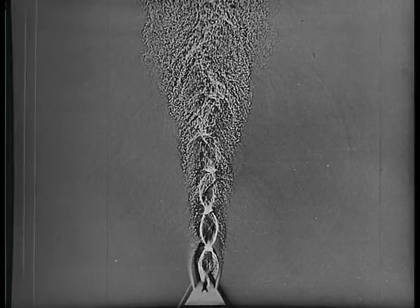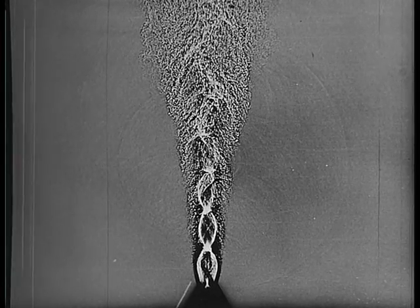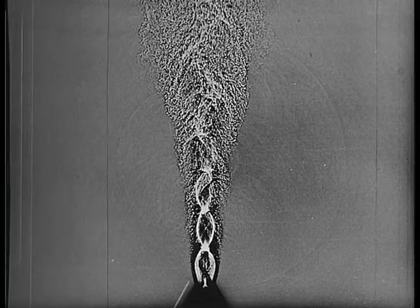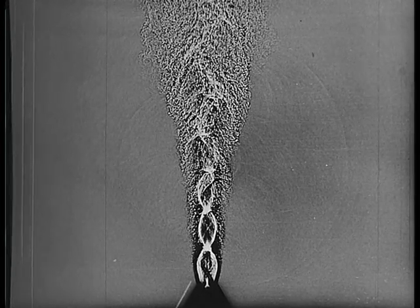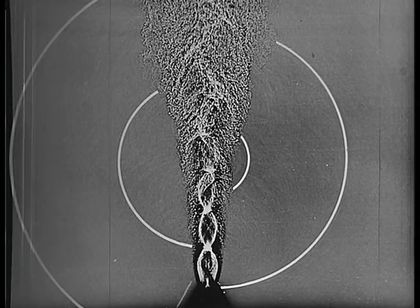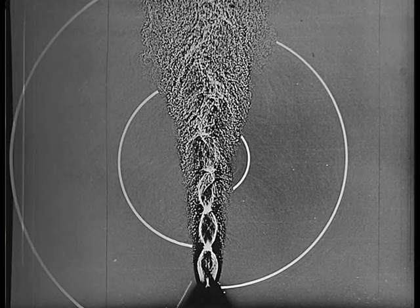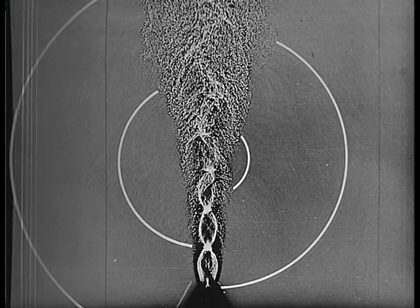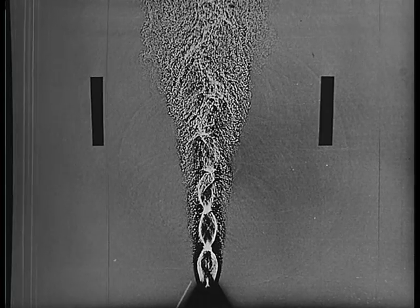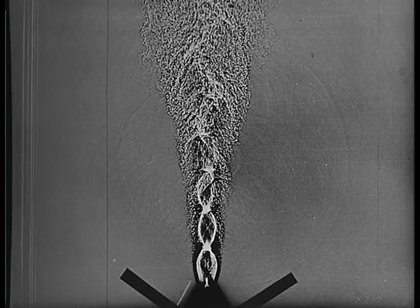If the feedback loop lies partly outside the jet, it seems reasonable to assume that the sound pulses themselves convey the feedback signal. To verify this supposition, reflectors were placed outside the jet, taking care not to influence the jet aerodynamically.